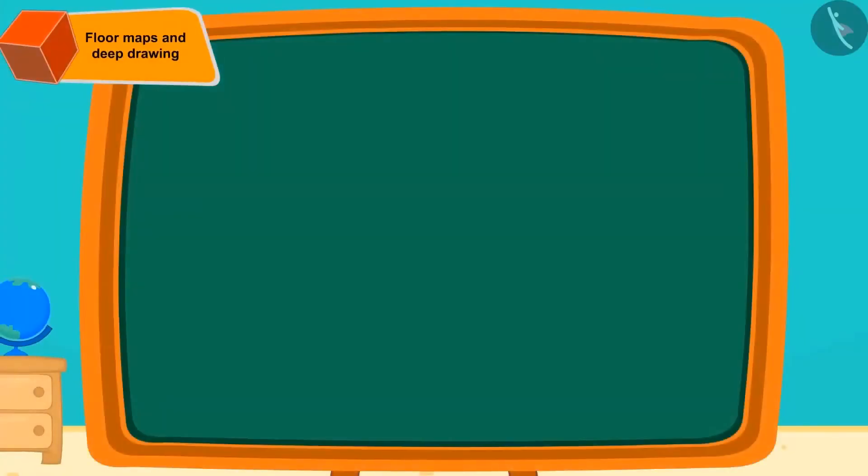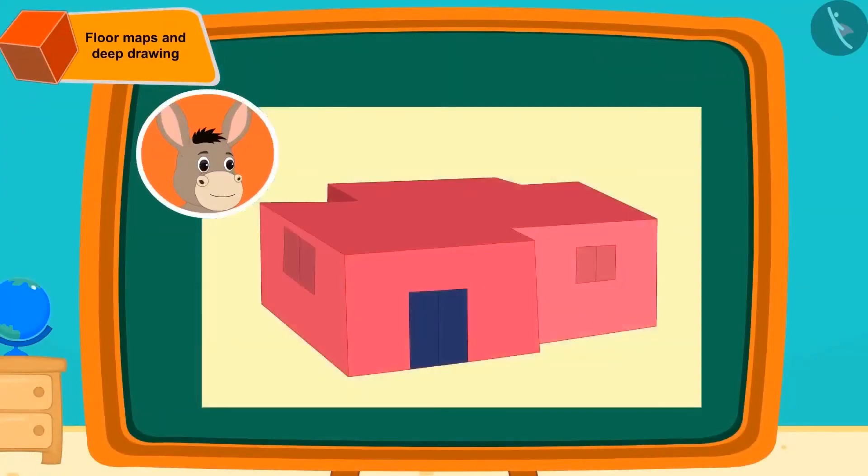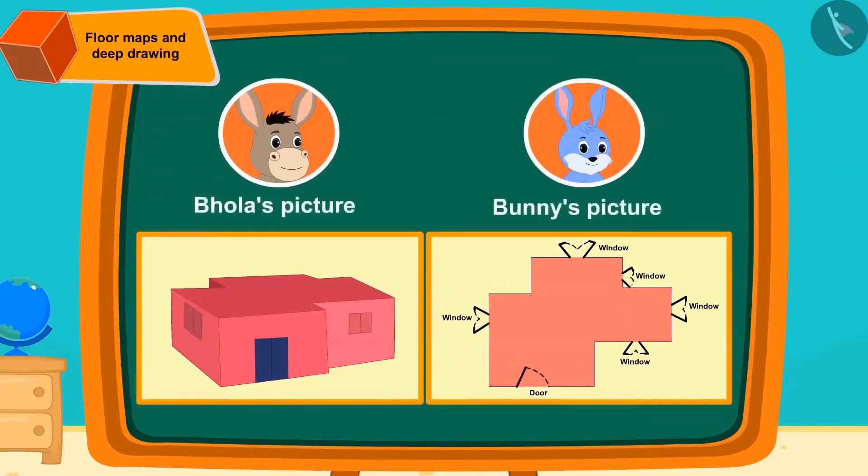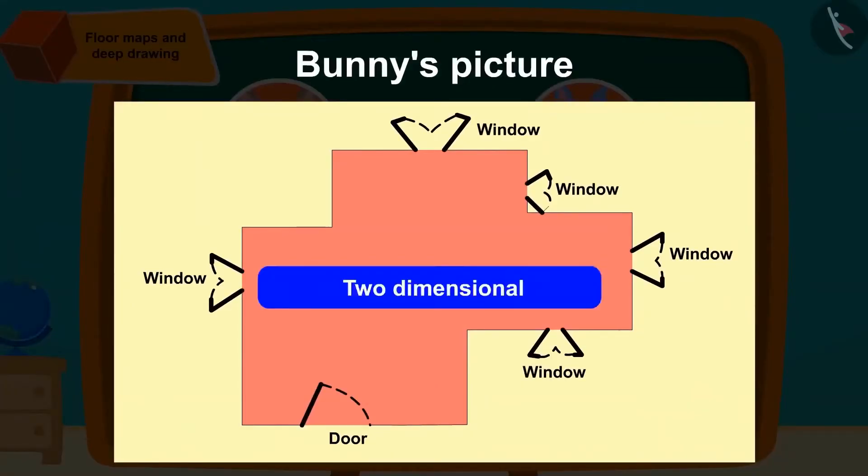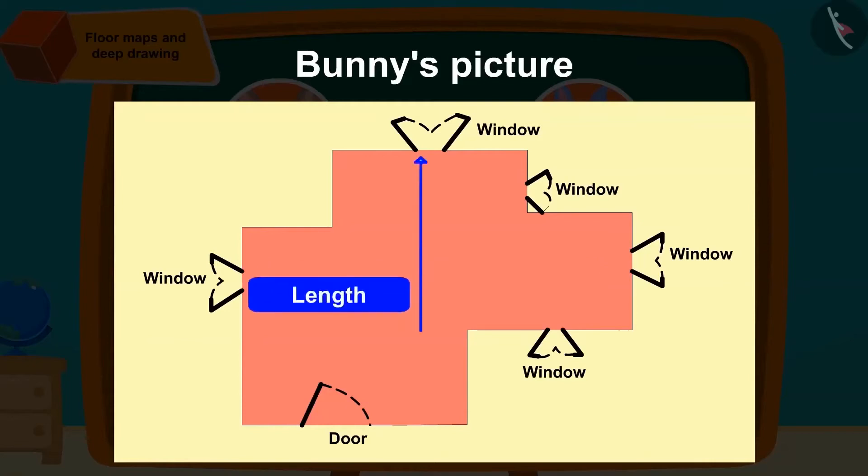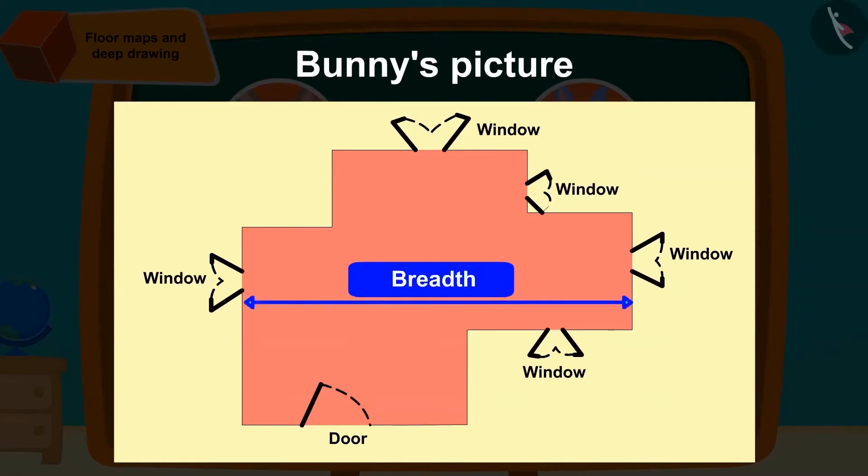Children, have you seen any picture similar to this one created by Bholla? Can you tell the difference between the two pictures that Bholla and Bunny made? Correct, the floor map that Bunny had made is a two-dimensional figure which has only length and breadth of the room.